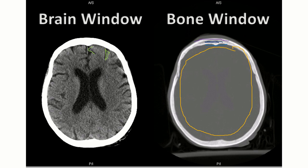Always keep in mind that any CT you review should be examined in both the brain window and the bone window. The bone window is important to see discontinuities in the bone — such as a fracture or metastasis — while the brain window is essential to see parenchymal anomalies like ventriculomegaly or intracerebral hemorrhage.